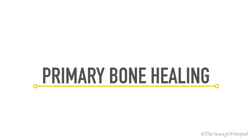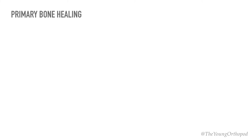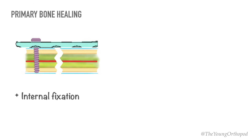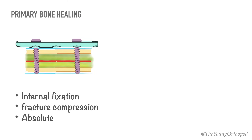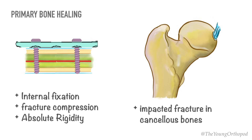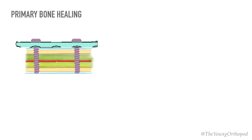Primary bone healing is seen when the fracture is reduced and held absolutely rigidly following internal fixation and fracture compression. A similar pattern of healing is also seen in impacted fractures in cancellous bones. Two patterns of primary bone healing are observed.